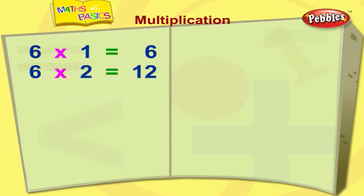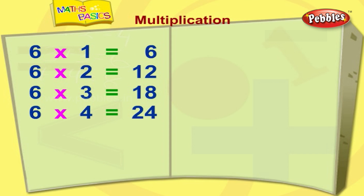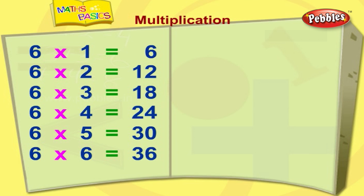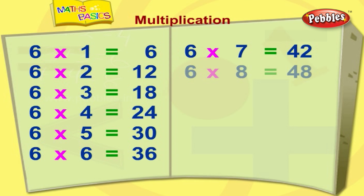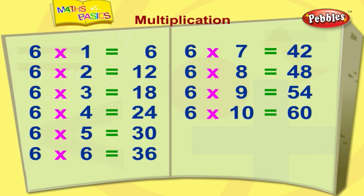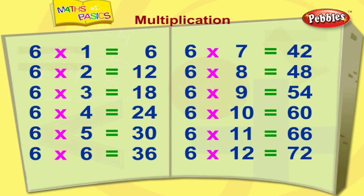Six ones are six. Six twos are twelve. Six threes are eighteen. Six fours are twenty-four. Six fives are thirty. Six sixes are thirty-six. Six sevens are forty-two. Six eights are forty-eight. Six nines are fifty-four. Six tens are sixty. Six elevens are sixty-six. Six twelves are seventy-two.